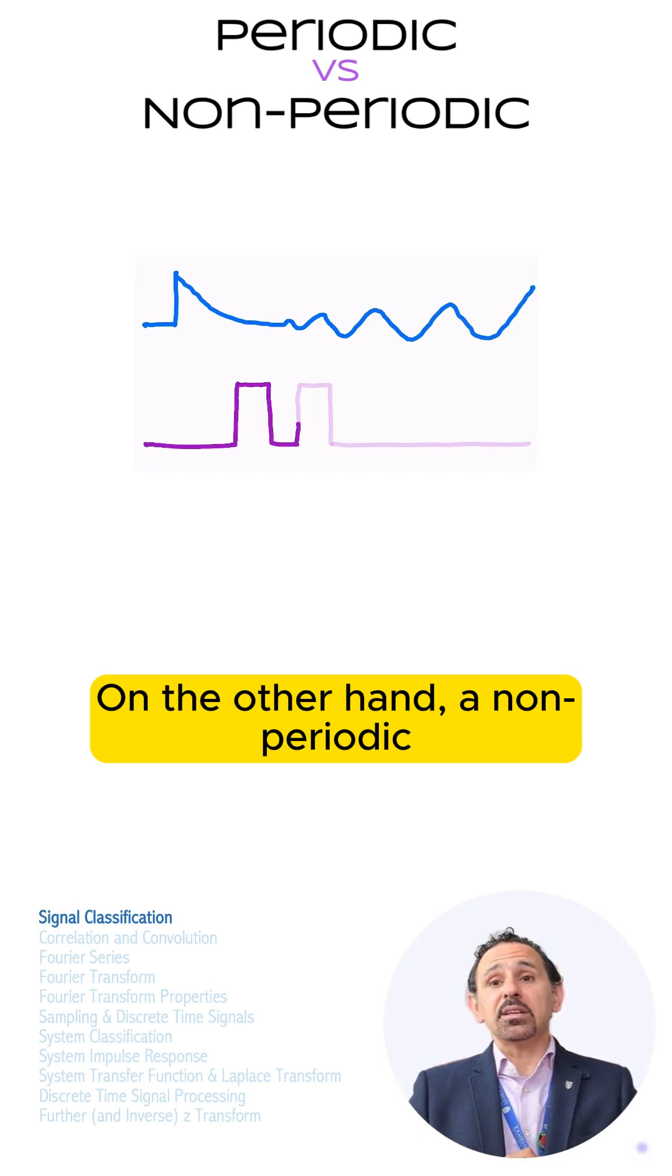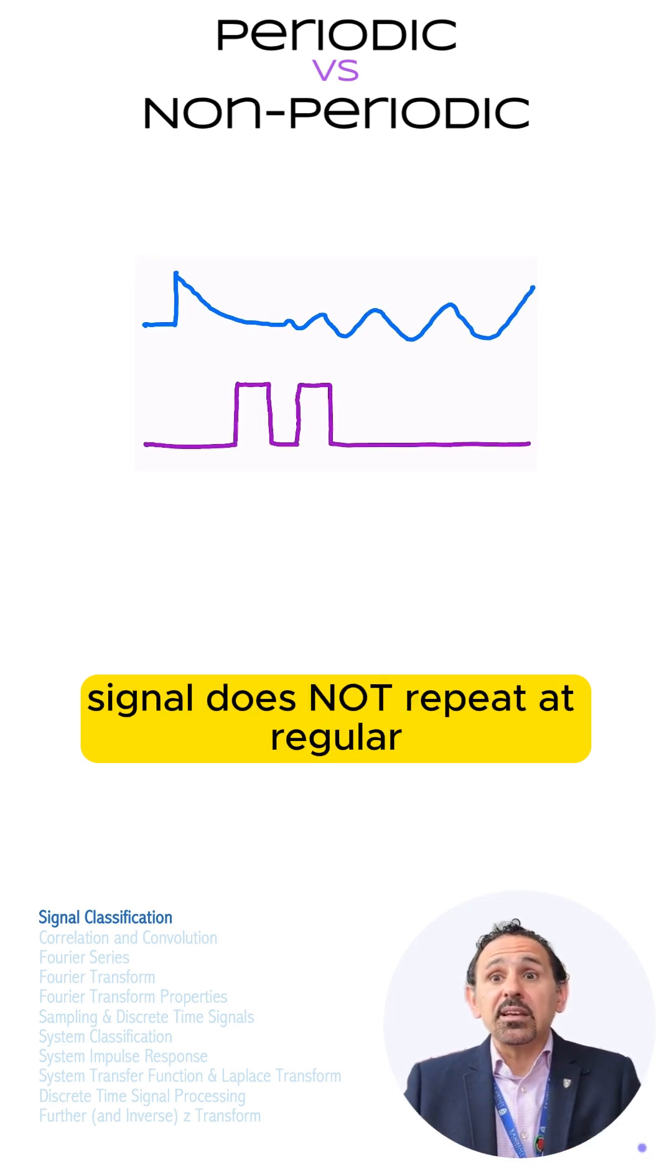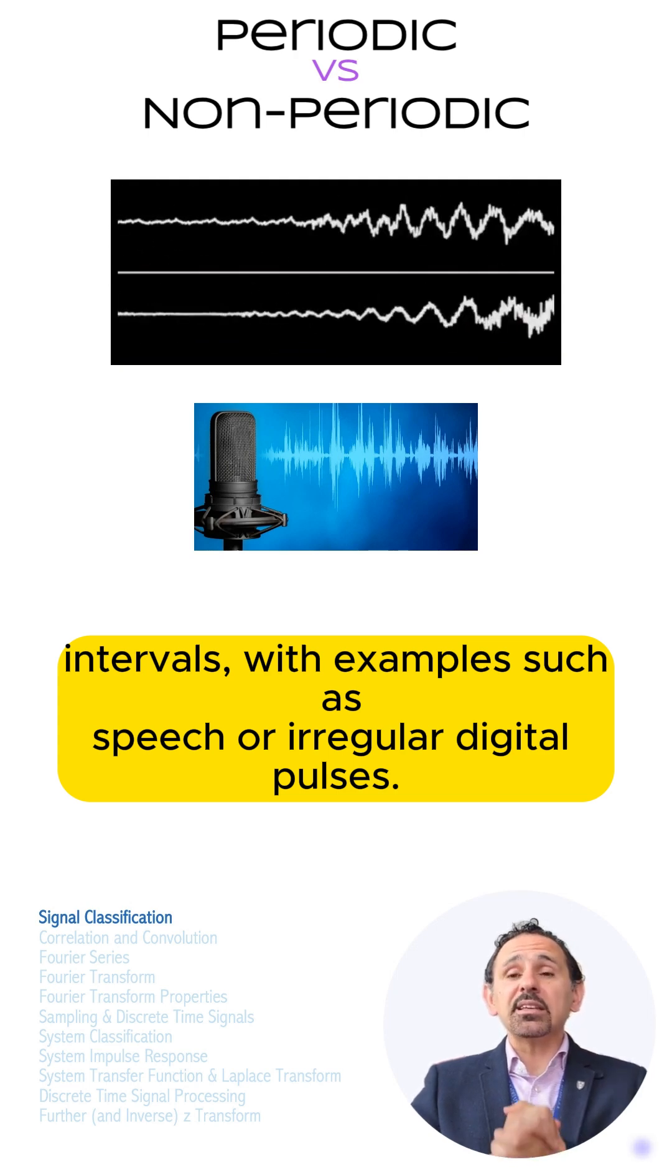On the other hand, a non-periodic signal does not repeat at regular intervals, with examples such as speech or irregular digital pulses.